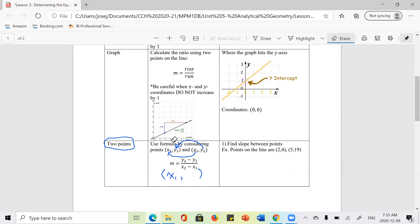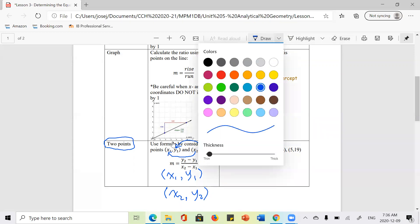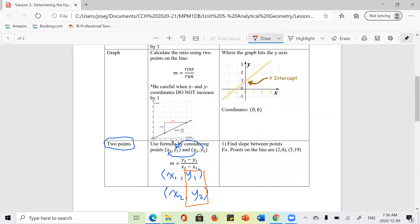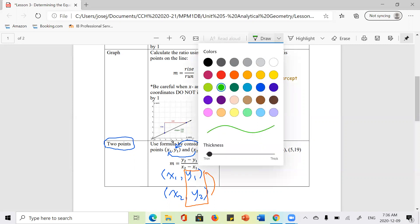So what you can do is you can label your points as x1, y1, x2, y2. And what we can do is we can simply subtract off the y-coordinates. So we just find the difference between the y-coordinates here.